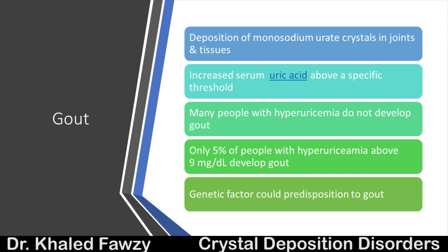Let's talk about gout. It is simply the deposition of monosodium urate crystals in the joints and tissues, and is the result of increased serum uric acid above a specific level. Many people have hyperuricemia and are asymptomatic — only about 5% of people with hyperuricemia above 9 mg/dL develop gout. Not everyone with high serum uric acid needs treatment, and not everyone with high serum uric acid has gout.